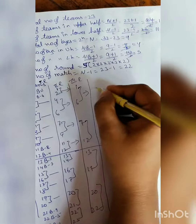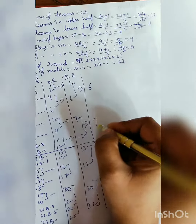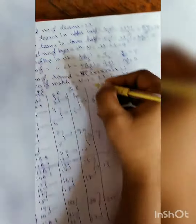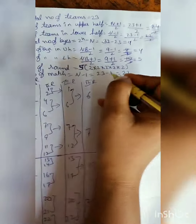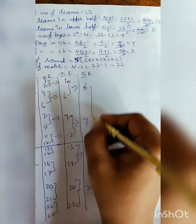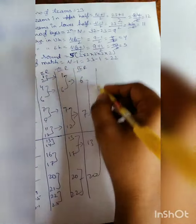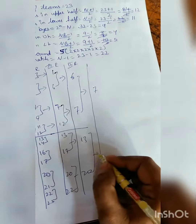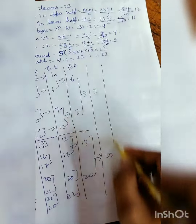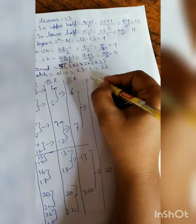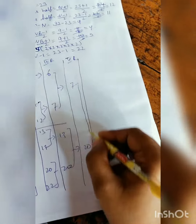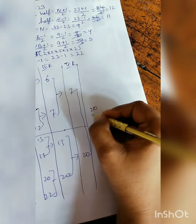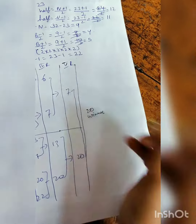After pairs are made, in the 4th round: 6 versus 7, 13, and here 20. This is your 4th round. After the 4th round you make pairs, and in the 5th round: 7 and 20 reach here. This is your 5th round — 7 and 20 play the final match. Suppose 20 wins, so 20 is your winner.